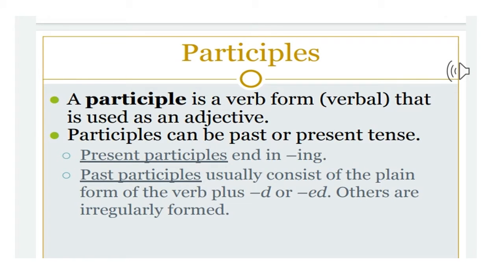A participle is a word that is formed from a verb and that ends in -ing when it is being used in the present participle form, or with -ed or -en at the end when the word is in the past participle form. Participles are used to form tenses of verbs or as adjectives.